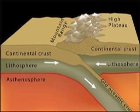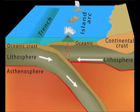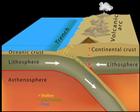So here, there are two of the three possibilities shown here. Here's a plate carrying a continent, and here's a plate that is purely oceanic. If you have a convergent boundary between a continental plate and an oceanic plate, it's the oceanic plate that's going to subduct — go back down into the mantle.